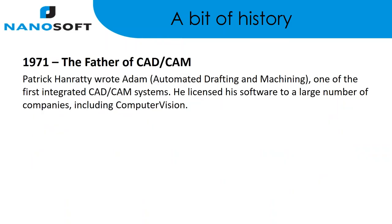Jumping forward to 1971 — there was a big gap of time from the late 50s and early 60s to the 70s in the development of CAD, primarily because they had to invent things like computer graphics and make computers fast enough. By about 1971, CAD was pretty mainstream. A fellow named Patrick Hanratty wrote Atom, which was regarded as one of the first integrated CAD-CAM systems, and he licensed that software to a large number of companies, one of which was Computer Vision.